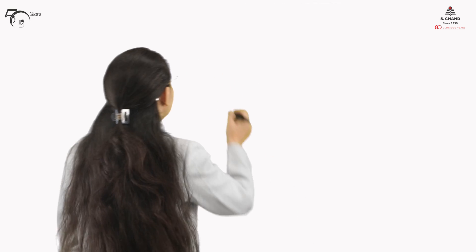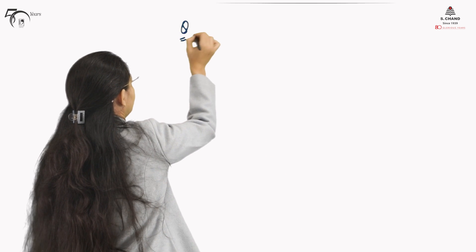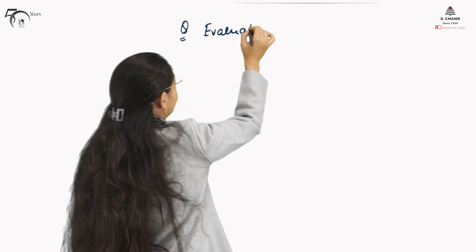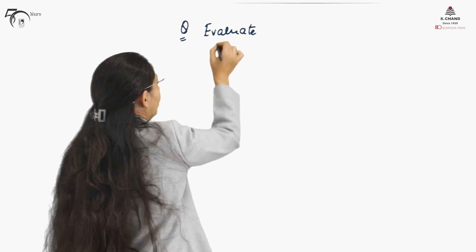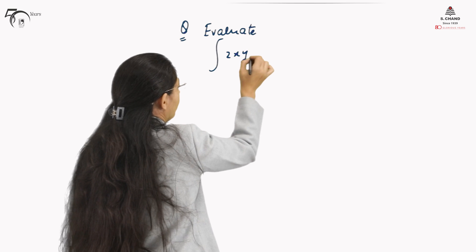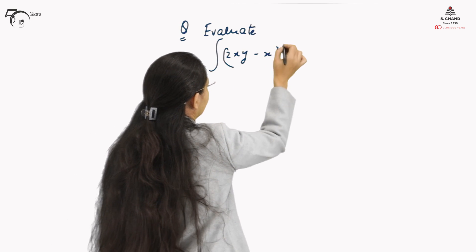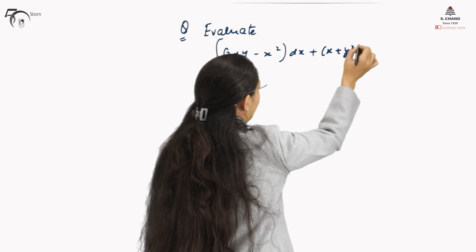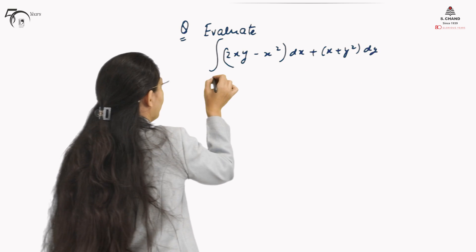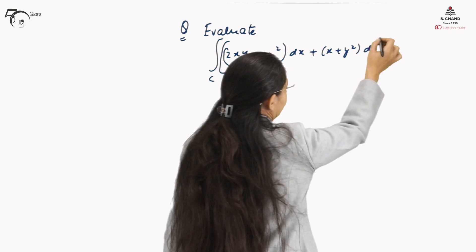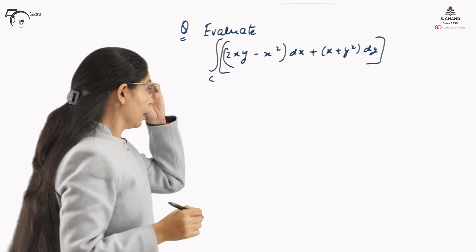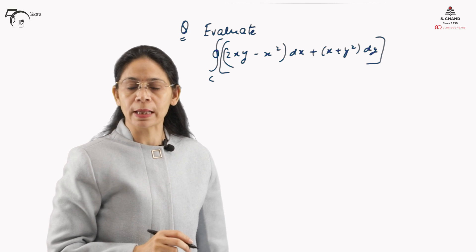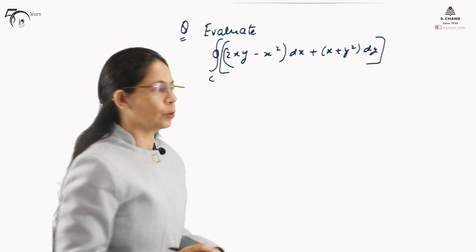We will take the first question: we need to evaluate the closed contour integral of (2xy − x²)dx + (x + y²)dy. The circle sign over the integration sign means that C is a closed curve.